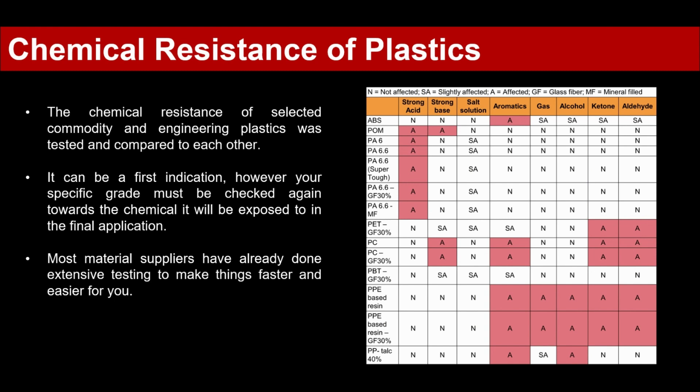You can see that ABS, for example, has a robust chemical resistance. Also the aliphatic nylons — it's just acids and salt which affect them. A similar picture for polyesters like polyethylene terephthalate, which is already more affected. And also polycarbonate we have to be careful with. Same with PPE — it's not affected by strong acids, strong bases, and salt solutions.